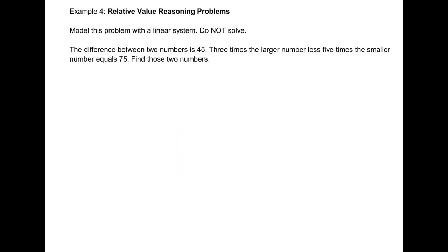Example 4: The difference between two numbers is 45. Three times the larger number minus five times the smaller number equals 75. Find those two numbers. Step 1: define our variables. We can usually find our variables in the last sentence. Let L represent the larger number, and let S represent the smaller number. Note: we generally avoid using S as a variable because it looks like the number 5.